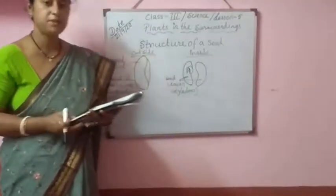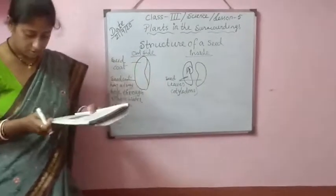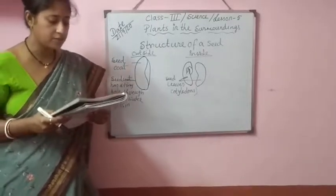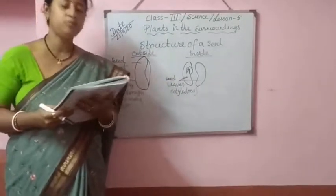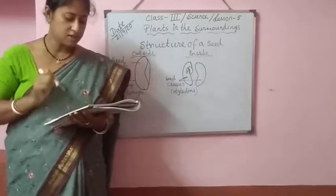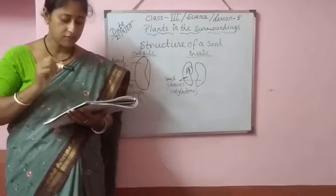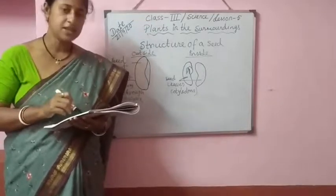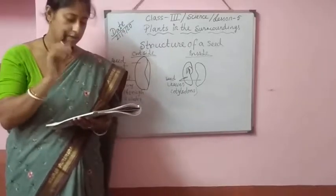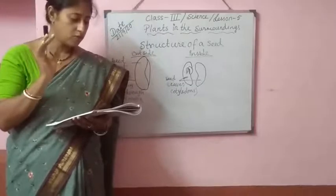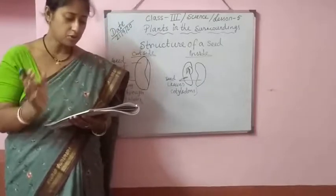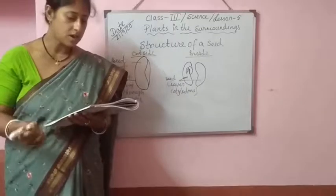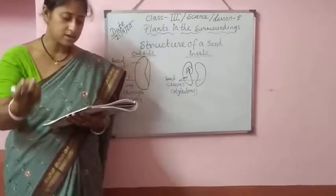Next point: germination, page number 53. Germination is the process by which a seed starts to grow into a new plant. When a seed is sown into the moist soil, it starts to grow under suitable conditions — meaning under the ground in moist soil.